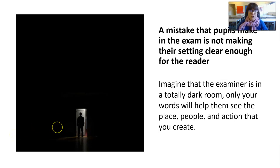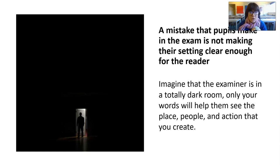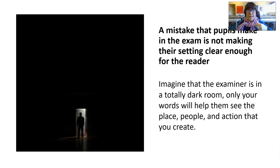This is important because it is a big mistake that pupils make in the exam: they assume that because they've said it's a woods, or a school library, they don't need to do any more description than that. The way to think about your description is to imagine that your examiner is like this person in the picture — they are in a totally dark room. Only your words will help them see the place that your story takes place, the people and the action. If you don't say it with your words, they will not see it.